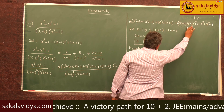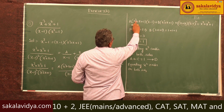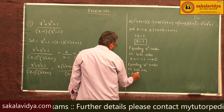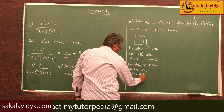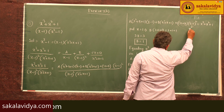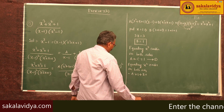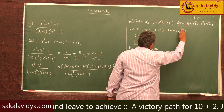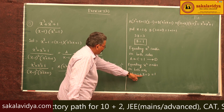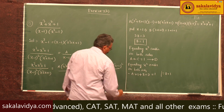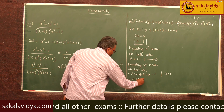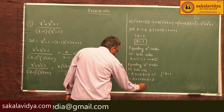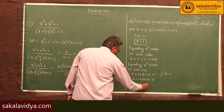Now equating x² coefficients on both sides: from A(x-1)(x²+x+1) the x² coefficient is -A + A = 0 contribution, plus B from B(x²+x+1), plus D from D(x-1)². Substituting B = 1, we get -A + 1 + 1 + D = 1, so -A + D = -1. Call this equation 2.